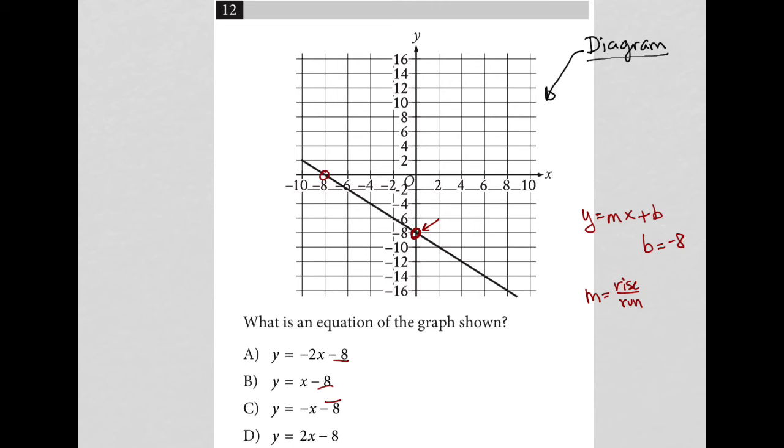So how far am I rising from my y-intercept to get to my x-intercept? Well, I'm going to rise up all the way to the origin. So that's up 8 units. And then I'm going to go to the left, another 8 units.